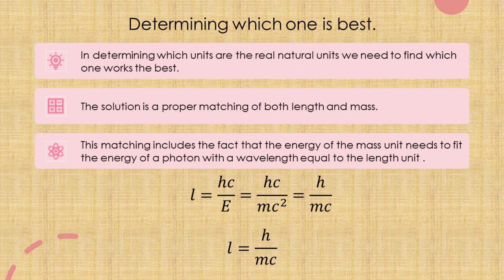The solution is a proper matching between mass and length. This matching requires that the energy of the mass unit fits the energy of a photon with a wavelength equal to the length unit. In the formula for the wavelength of a photon, wavelength equals Planck's constant times the speed of light divided by the photon's energy. Substituting mc² for the energy gives L equals Planck's constant over Planck's mass times the speed of light — and this must be valid for a true set of natural units.